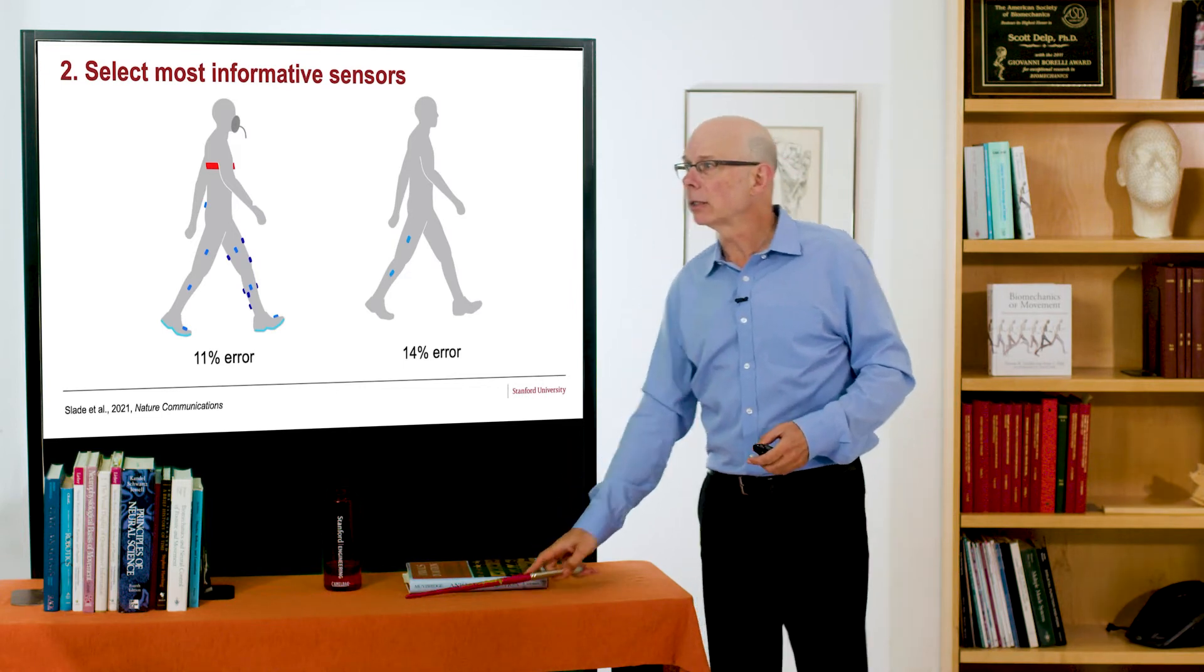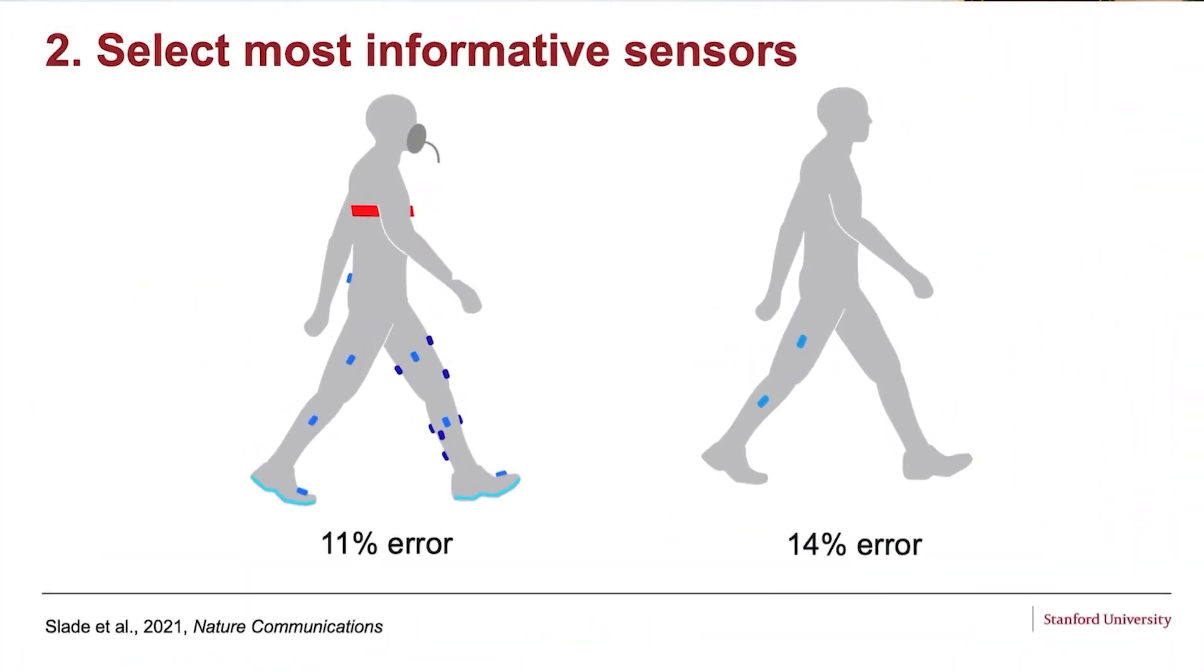Pat Slade really led this in my laboratory where he had many sensors. And with this many sensor system and a heart rate monitor, you could get errors of only about 11 percent. Pretty darn good. The exciting finding, however, was that with only two sensors, one on the thigh, one on the shank, there was only 14 percent error.